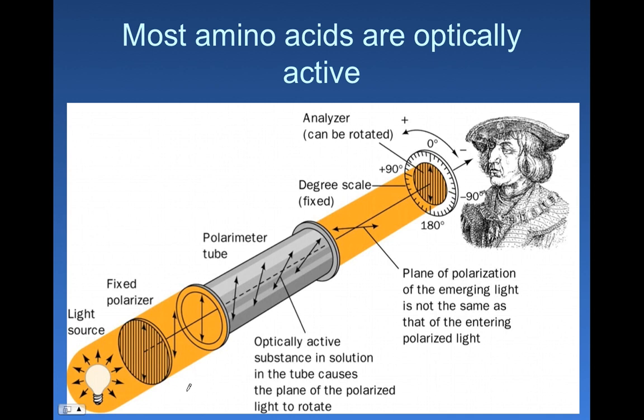Remember back to organic chemistry when we talked about optical activity and stereochemistry, where we defined optical activity as the ability of a sample to rotate plane polarized light. Optically active substances can rotate plane polarized light. They do so in a clockwise or counterclockwise fashion, and we can calculate the specific activity based on knowing the path length, the rotation, and the concentration of the substance in our sample tube.